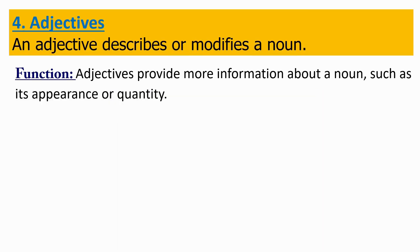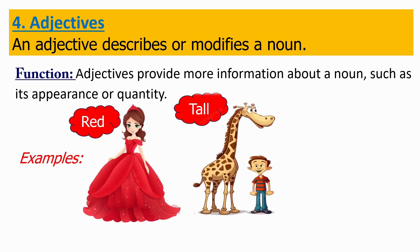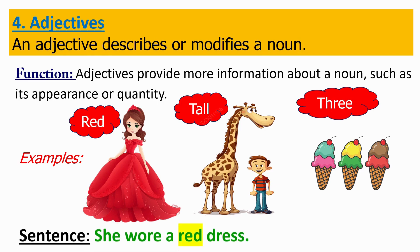Now let's check what are adjectives. An adjective describes or modifies a noun. Adjectives provide more information about the noun, such as its appearance or quantity. For examples: red, tall, three. Now let's check its sentence: "She wore a red dress." In the sentence, the word red describes more about the dress.